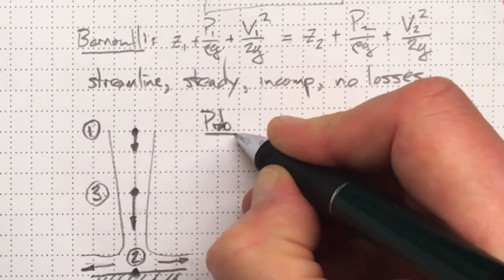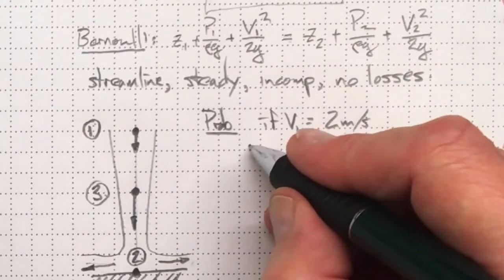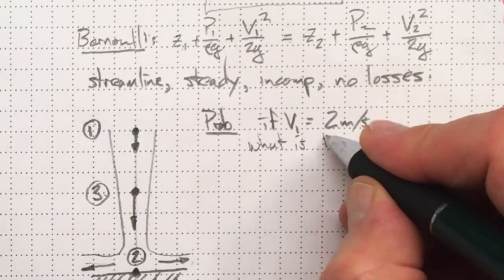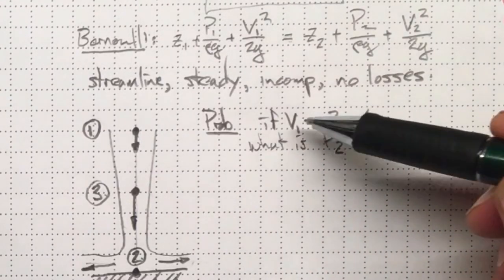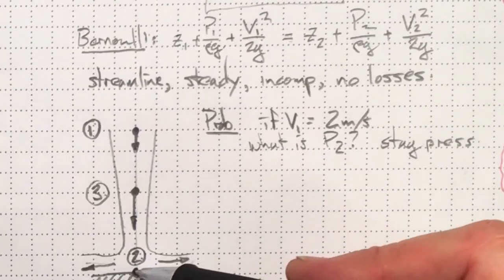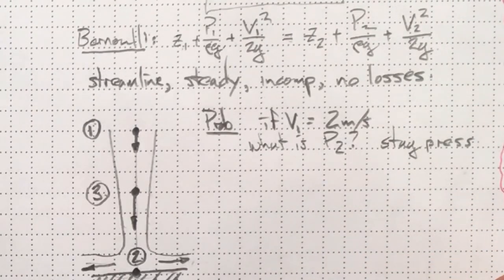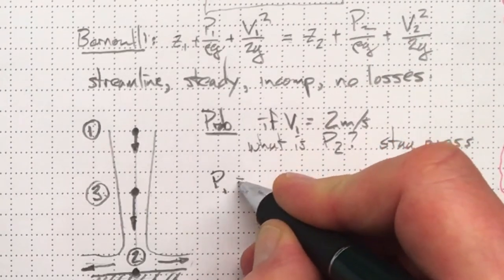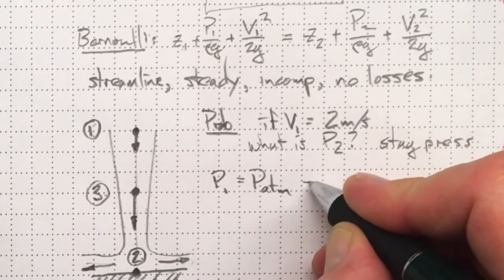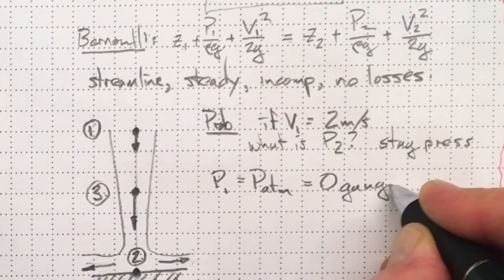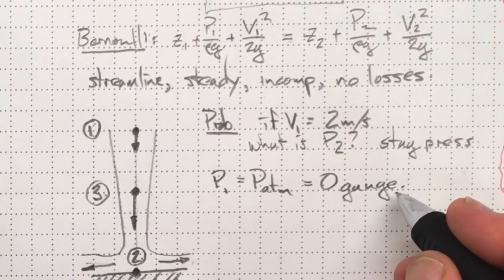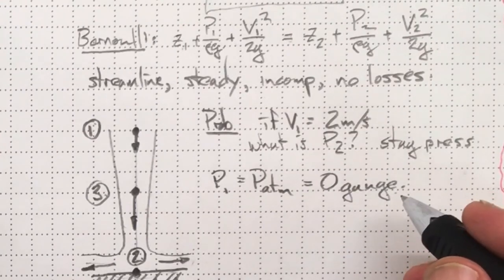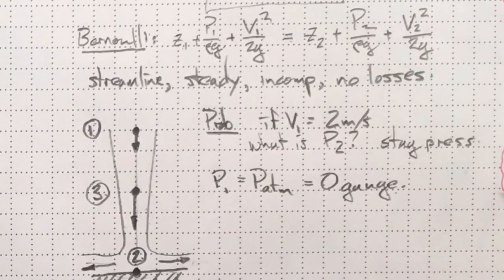The problem we've been posed is if V1 is equal to two meters per second, what is P2 at the stagnation point down here where it's come to a stop on the plate? We know that the pressure at point one is atmospheric pressure, which is zero gauge pressure. We usually use gauge pressure if we're doing mechanical engineering. We're mostly interested in the difference between the pressure that we've got in our system and atmospheric pressure.